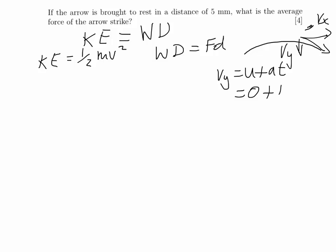So U is zero, and we're going to plus AT, so acceleration due to gravity times the time that it's falling for, which is one second. So our vertical component is 10 meters per second. We worked out our horizontal component earlier on, which is 50 meters per second. Now we need to find the component of those two.